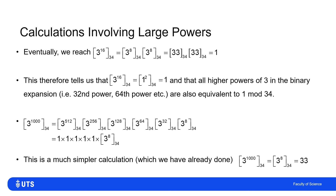That can be calculated much more easily, and in fact I already did it on the previous slide: 3 to the 8 leaves remainder 33 when divided by 34. So because 3 to the 8 leaves remainder 33, I know that 3 to the 1000 also leaves remainder 33.